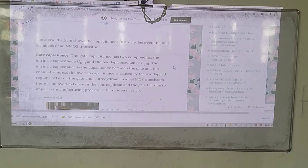Cgin is the intrinsic capacitance, and Cgol is the capacitance between gate and the channel where overlap occurs.